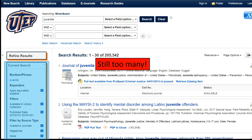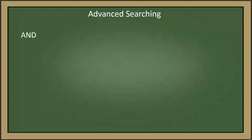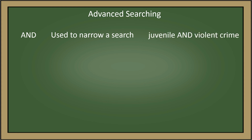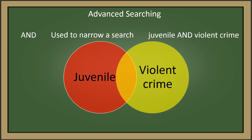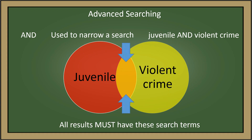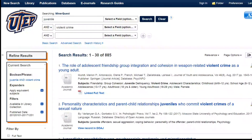Now I'm ready to do an advanced search to get fewer and better results. Adding more search terms using AND narrows your results by giving you articles that must contain all the search terms you typed in. In the case of 'juvenile' AND 'violent crime,' you will obtain articles that must contain both terms. As you can see, by adding 'violent crime' using AND, we've narrowed our search results even more.